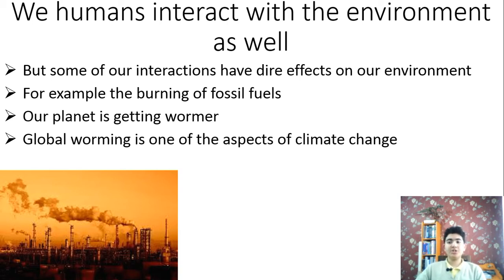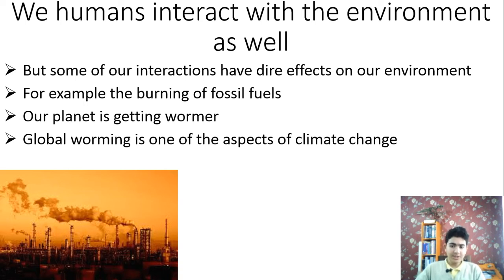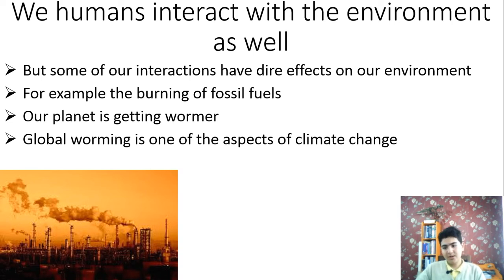This ongoing global warming is a major aspect of climate change — a directional change in the global climate that lasts for three decades or more. But global warming is not the only way that climate changes; for example, precipitation patterns are also shifting, and extreme weather events such as storms and droughts are becoming more frequent.